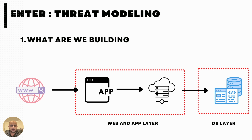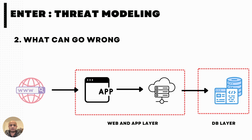Now we can think about what can go wrong. Identifying threats initially can seem intimidating to a lot of people, but don't worry about it if you're doing it for the first time. The whole point of this course is to gently walk you through threat identification. And we will look at STRIDE later on, which is a threat categorization methodology — an abbreviation for things that can go wrong in security.